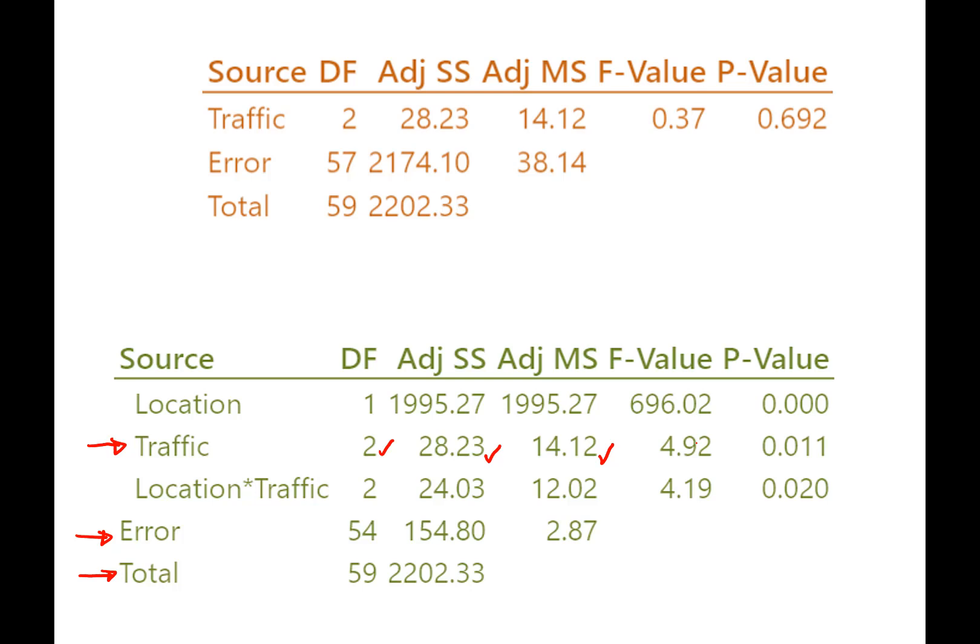But before we explore that too much more, let's go down to the total line, which is in common between both. And we see that, yeah, we still have 60 data points. So we still have 59 degree of freedom and the total spread of the data hadn't changed at all. It's still the same data. So it's got to have the same total spread or total dispersion or total sum of squares.